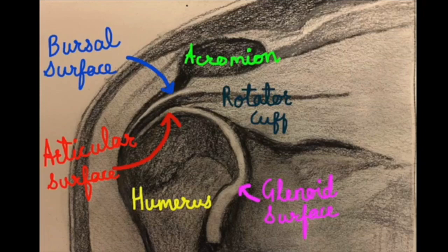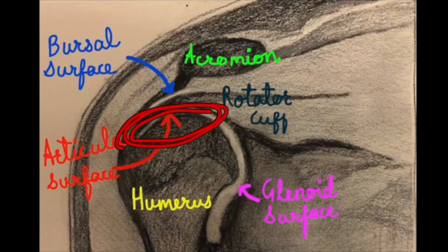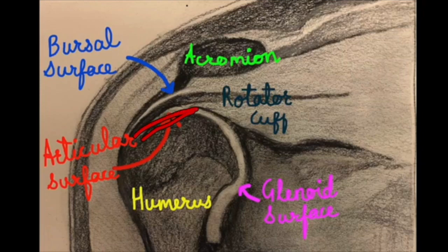On the other hand, internal impingement or the articular surface impingement happens more inferiorly, right around here. The reason it's called articular is because the impingement happens between the posterior superior aspect of the glenoid and the undersurface of the rotator cuff. So as you can see, it is not the top part of the rotator cuff, but it's the one that is below.